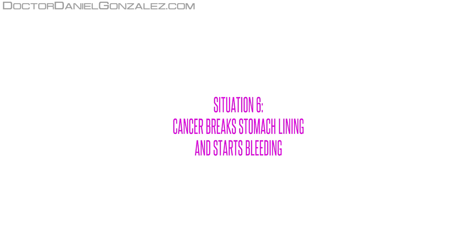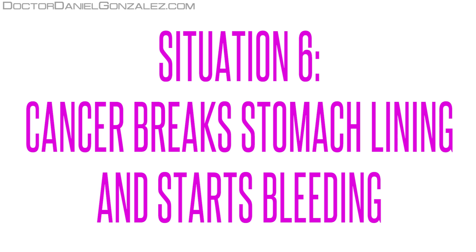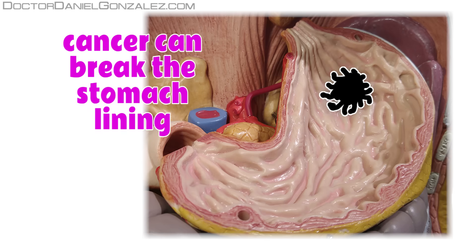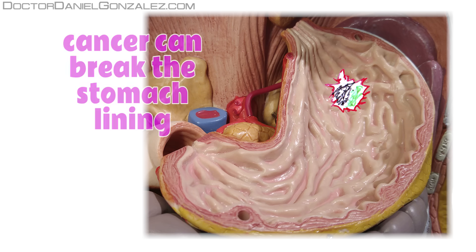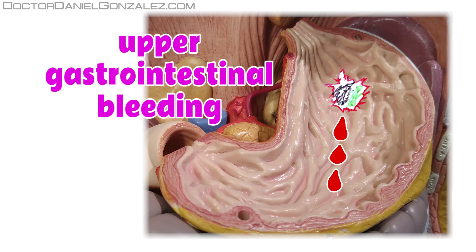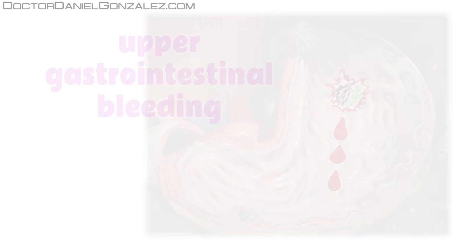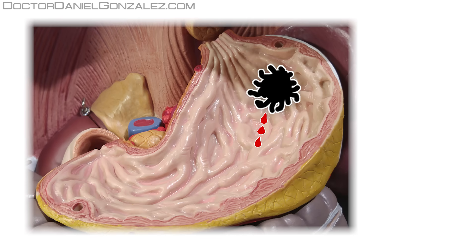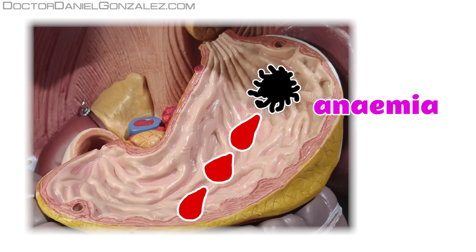Situation 6. Cancer breaks stomach lining and starts bleeding. Because the tumor can break the stomach lining and thus a blood vessel, either from the stomach or from the tumor itself, the person with stomach cancer may start bleeding without knowing it. It is what is called upper gastrointestinal bleeding. When bleeding is minor, symptoms won't be noticed. But if bleeding is constant and with certain intensity, it may appear an anemia with the progressive fatigue that goes with it.